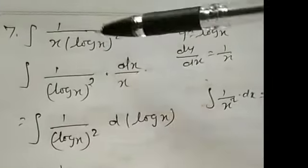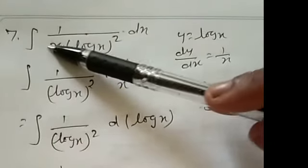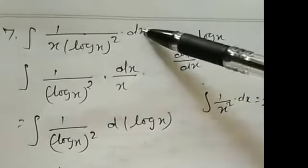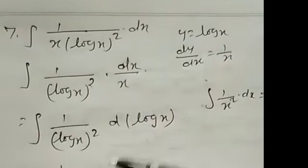So, that is 1 divided by log x whole square. Just write this term alone. And then this x term, you know, you can take it last. That is already numerator dx. So, dx divided by x. And then next line,